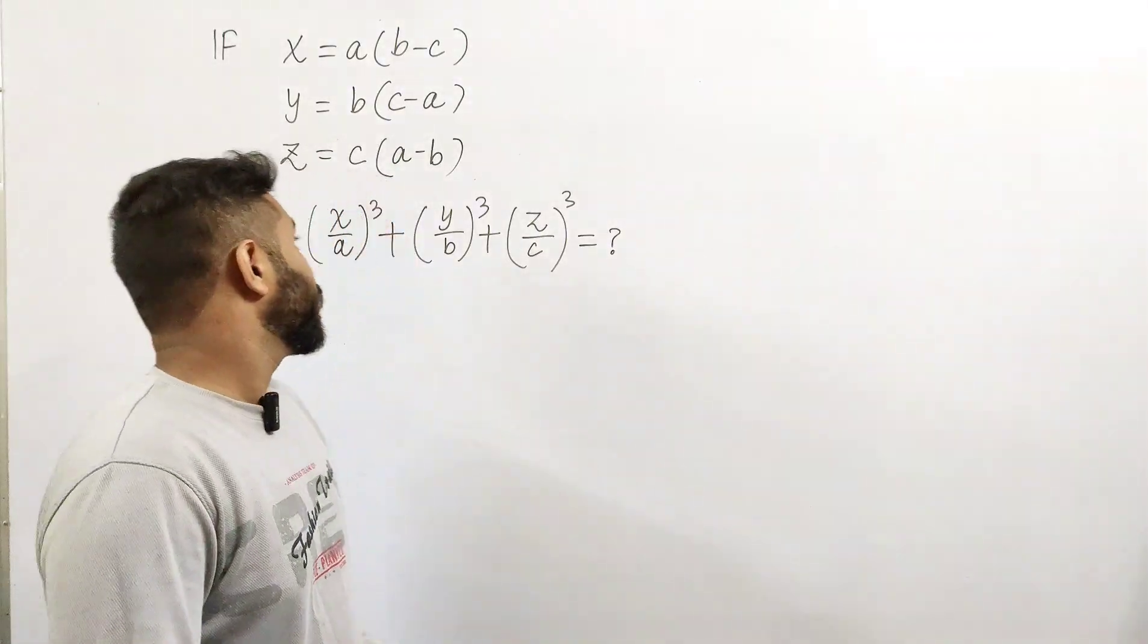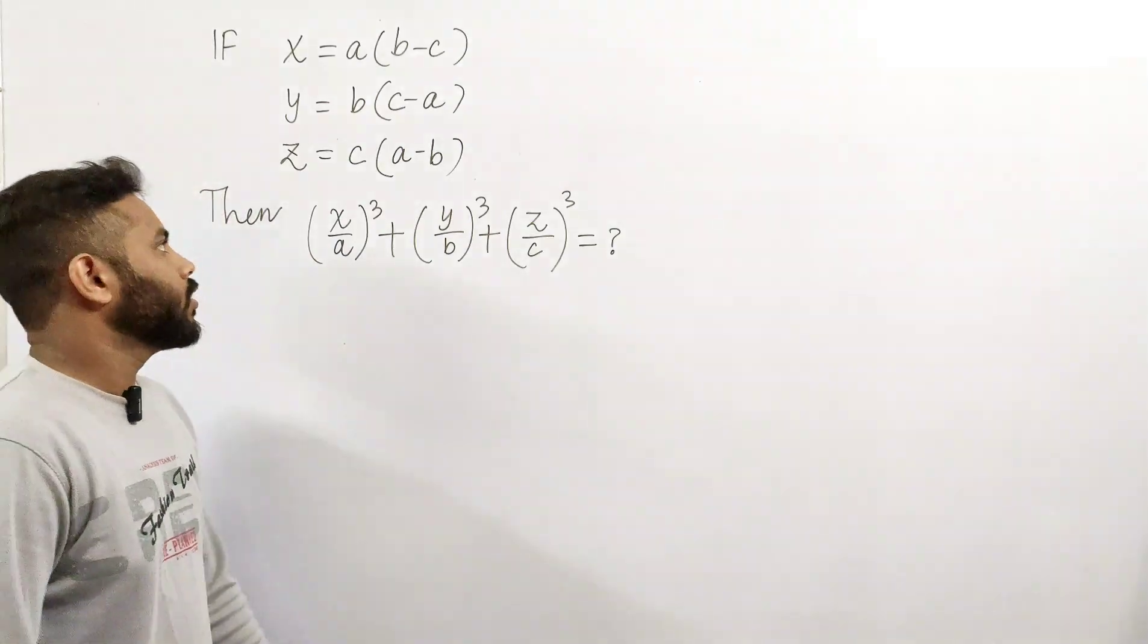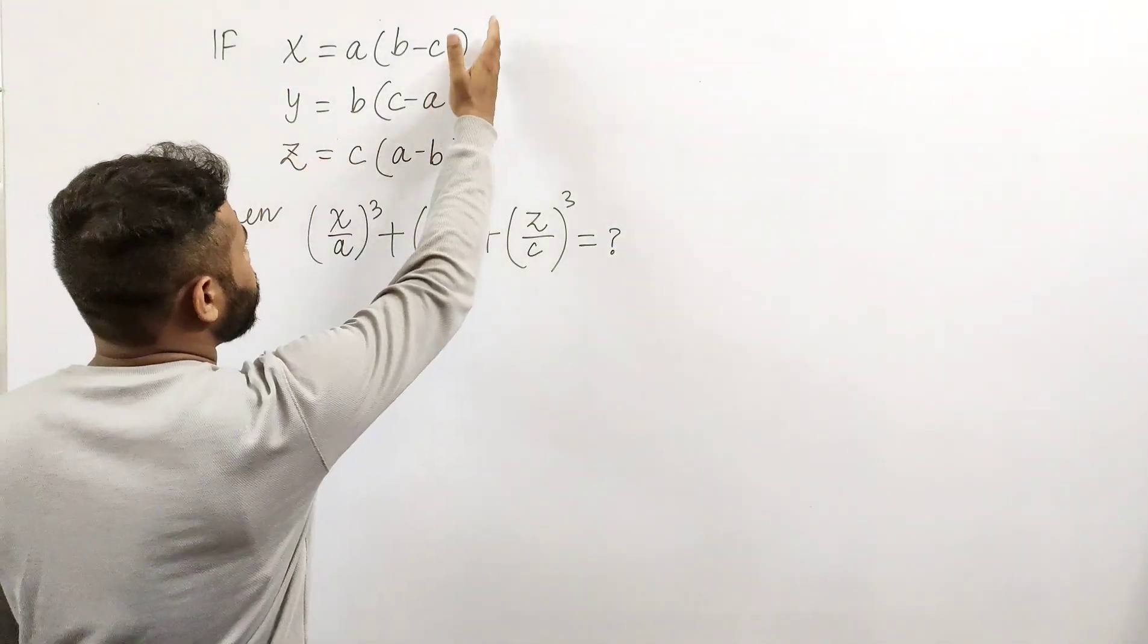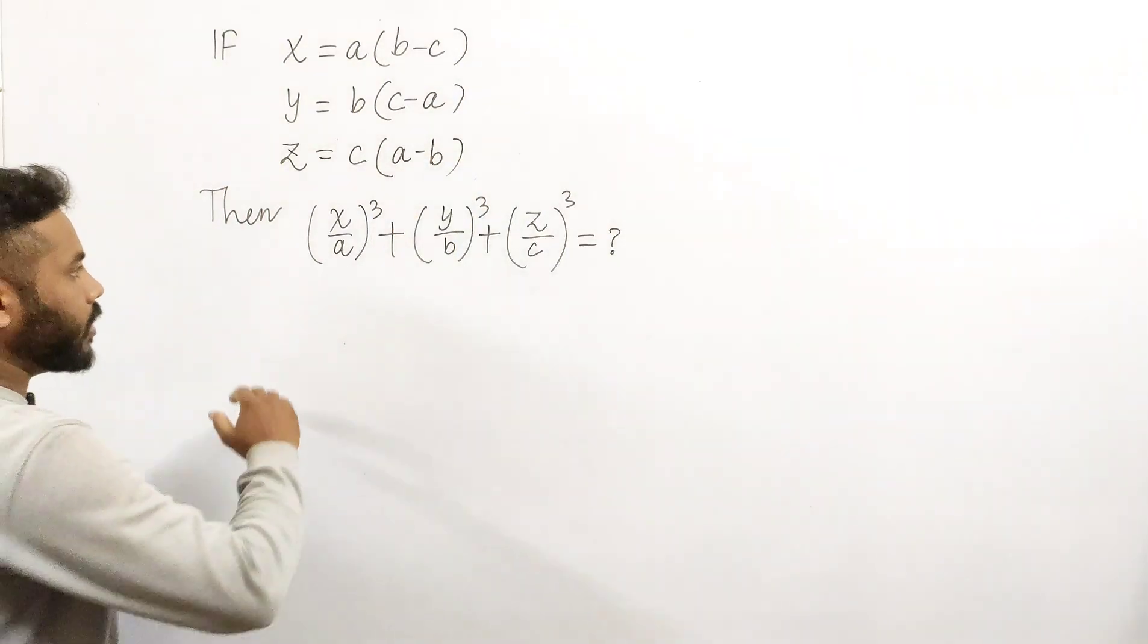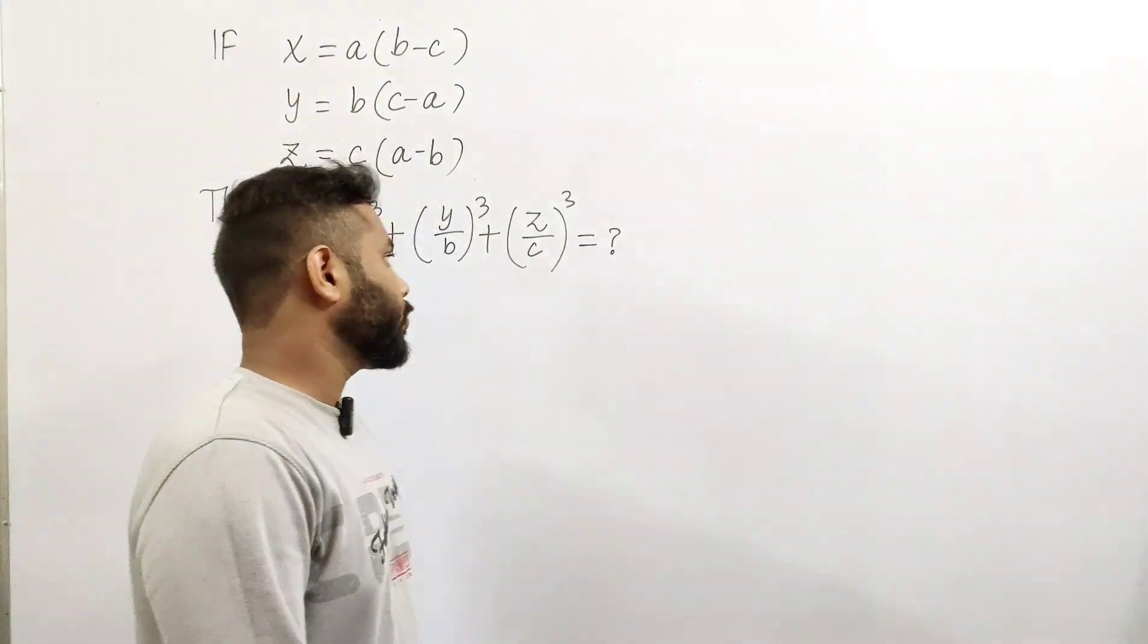Hello everyone, today we're back with a new question. Here it is: the condition is x = a(b-c), y = b(c-a), z = c(a-b). Given this expression, we have to find the value of this expression using nothing but elementary algebra.